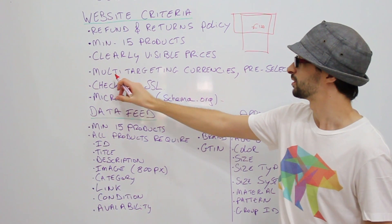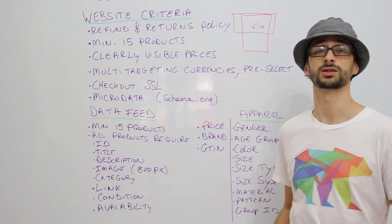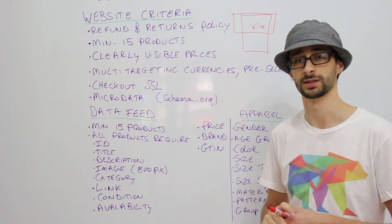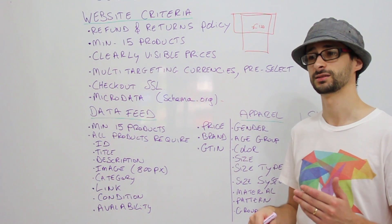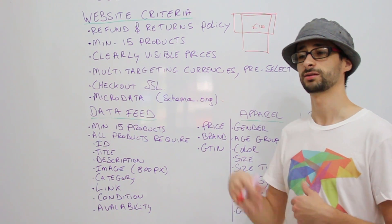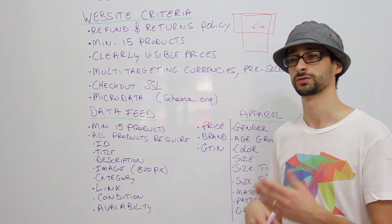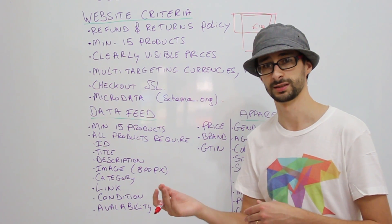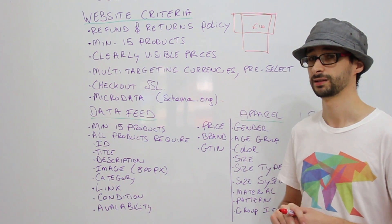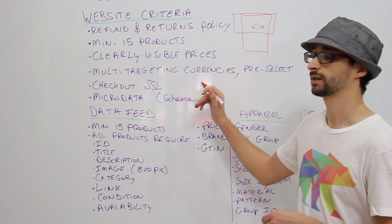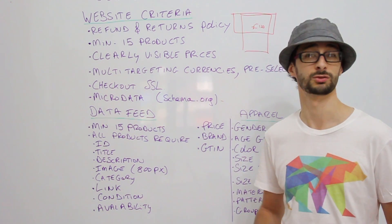If you have multiple currencies available on your website and you want to target multiple countries, then make sure that if you're, for example, from the United States and you click on the product, the price shown is in US dollars. The same goes for if the website is targeting the British market — when a customer clicks on the product, they should see the British pound and not the US dollar.